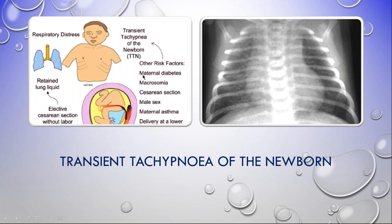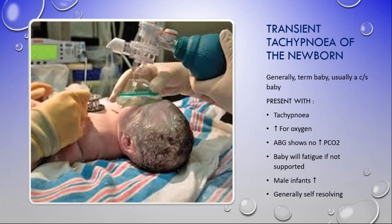Risk factors for TTN include maternal diabetes with macrosomia, caesarean section, male sex, maternal asthma, and delivery at a lower weight. These babies present with tachypnea and need some oxygen. Their blood gas shows no raised PCO2. The baby will tire if not helped or carefully monitored. There is an increased incidence in male infants and it generally resolves itself, usually within 12 to 24 hours.